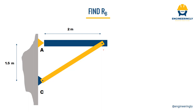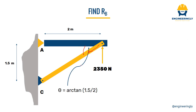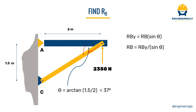Now that we have all these forces, we know that the reaction at point B will be 2350 Newtons. In order to find the compressive force in the member, we have to obtain the angle theta. We know the values for the opposite side and the adjacent side, so theta equals the tangent inverse of 1.5 divided by 2, which gives us theta equal to 37 degrees. Since the y-direction component of this force equals the member force multiplied by sine of 37 degrees, we can write: reaction in the member equals the reaction in the y direction divided by sine of 37 degrees. From here we obtain the reaction in the member to be 3905 Newtons.